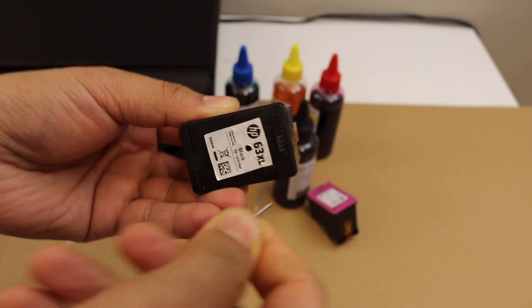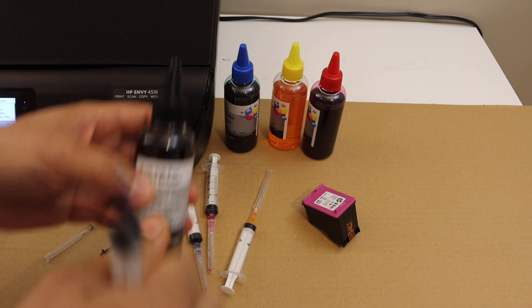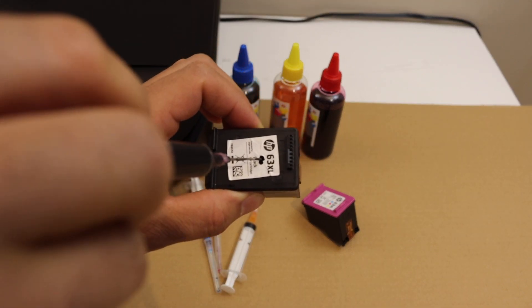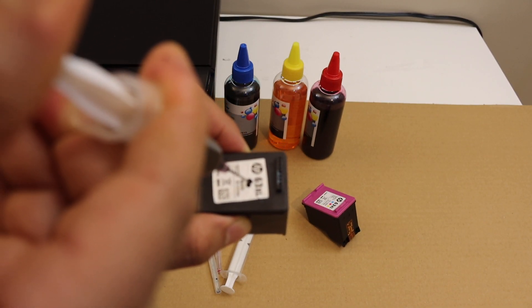Now simply take 3 ml of the ink or you can take more if you want. Insert the syringe here, press it slowly and let it settle down.